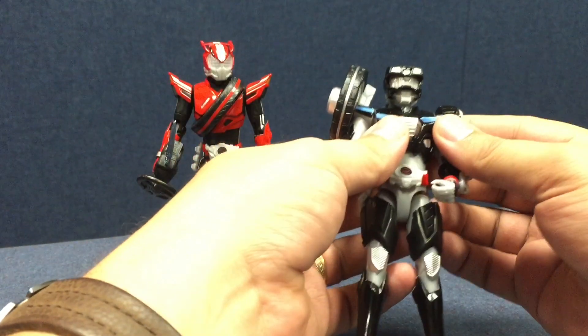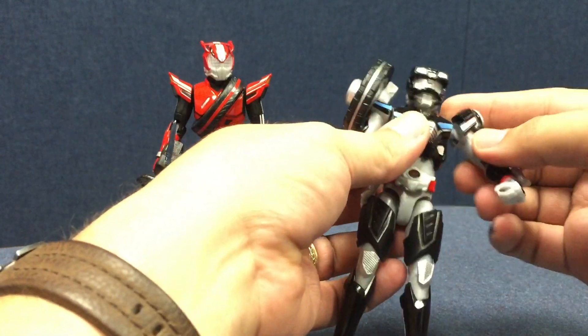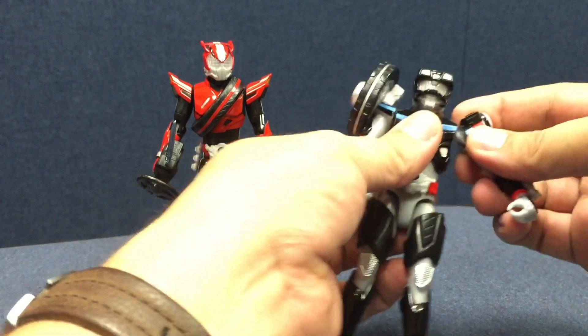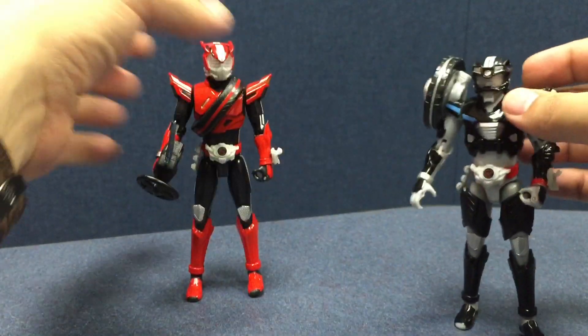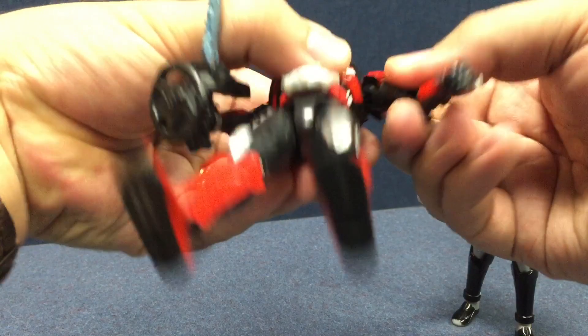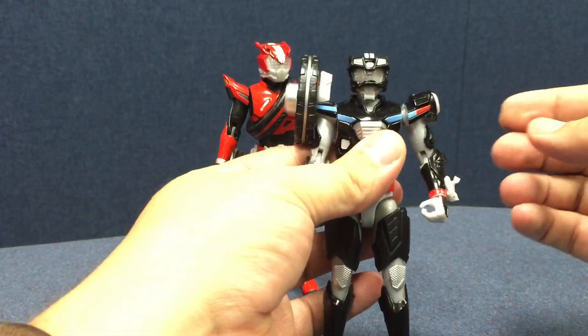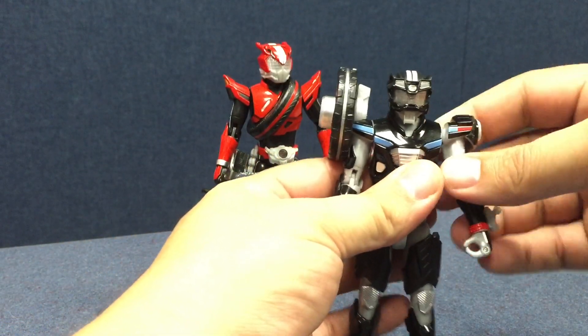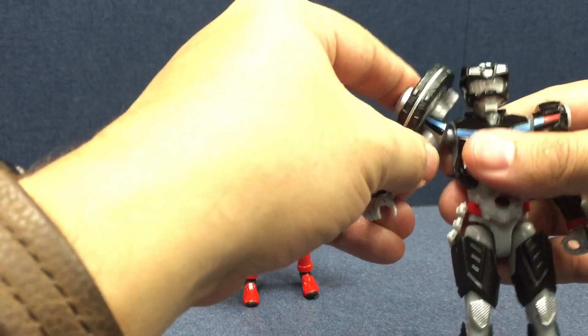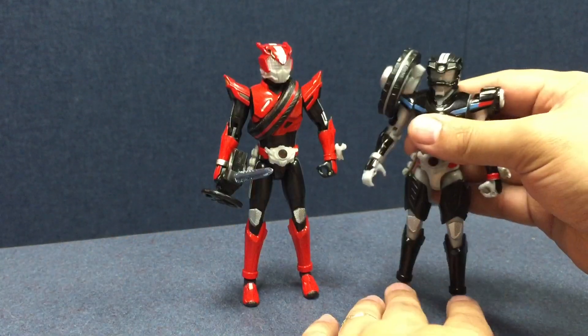One little thing I want to point out too, as well, the shoulders on this one actually pull out to allow the bigger shoulder pads some clearance. That doesn't do that on drive. Drive is just a standard shoulder, but type wild does actually have pull out shoulders to give them a little bit more freedom of motion, which is cool, especially with this big, I guess, mostly for this big old tire over here.